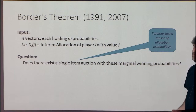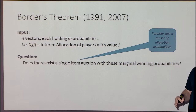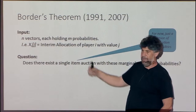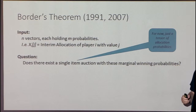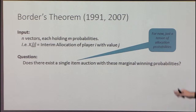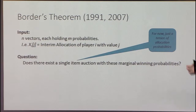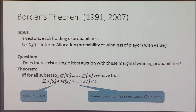The input to Border's theorem is: suppose each of N players can have one of M different values, and I'm telling you the probabilities that player i wins for each one of those values. So you get M probabilities for each player — let's call this X_ij, the probability that player i wins if his type is j. The question is: does there exist an auction which gives you these winning probabilities? It's a question about whether there exists a tensor — an N-dimensional matrix with N numbers on each side — where the averages work out according to the X_ij. Border answers this completely.